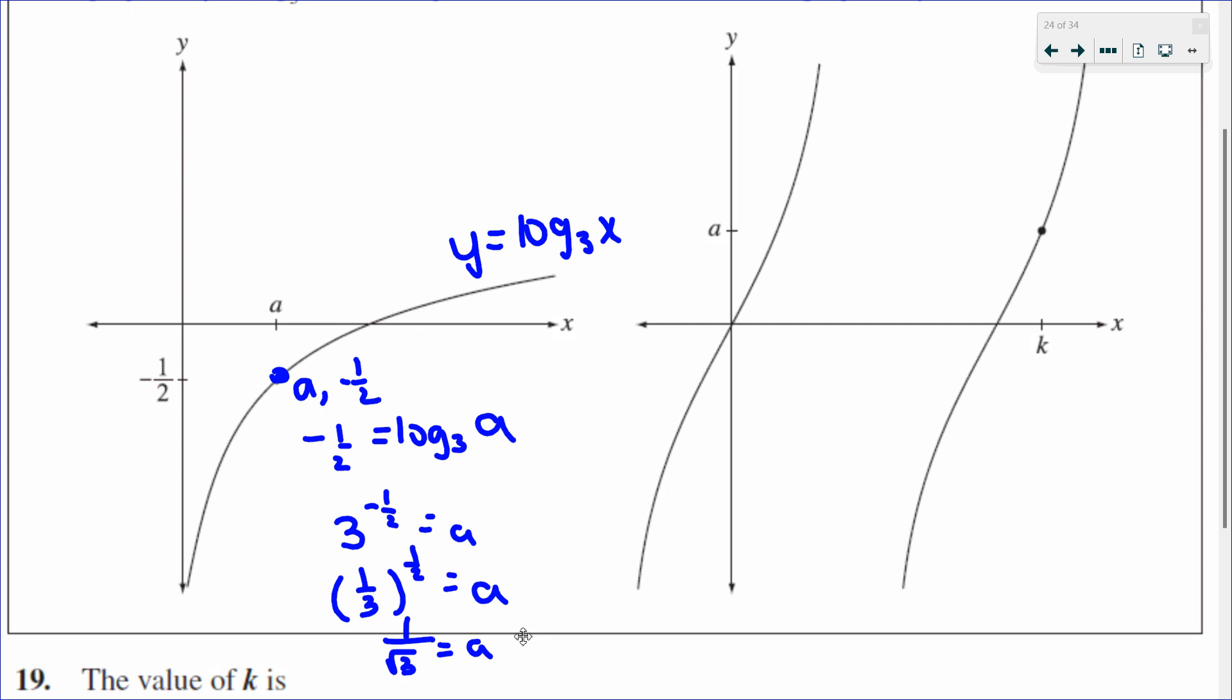I'm trying to solve for a value of K, which is on this tangent graph. So here's the graph of tanX, and this graph here passes through the point K and A. Now, of course, we already know what A is now, so it passes through the point K and one over root three.